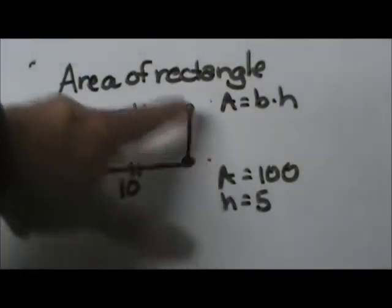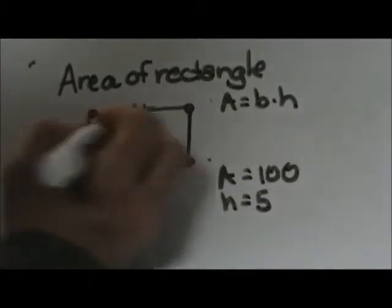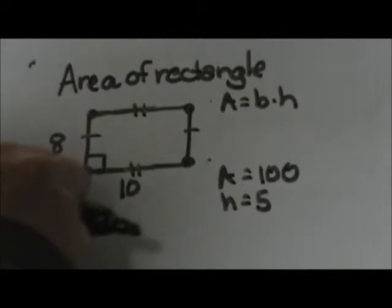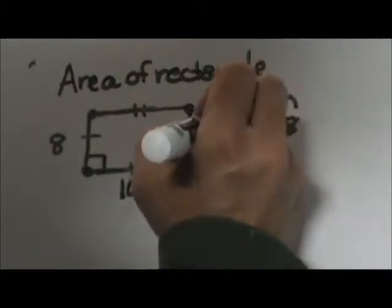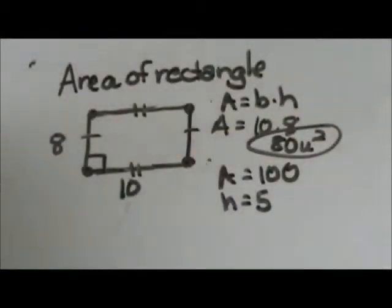In this figure we have a rectangle where the opposite sides are congruent. The top and bottom are 10 and the left and right are both 8. We're going to plug in the base times the height: 10 times 8, getting an area of 80 square units.